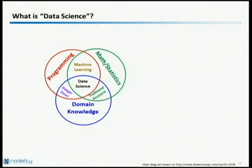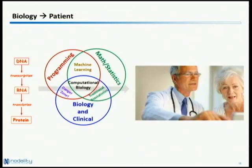I want to talk briefly about data science, because this is how we connect to the computational work. I've borrowed the idea for this Venn diagram from Drew Conway's blog, where he defined data science in a way that's very much aligned with how I think about it. It's an interdisciplinary practice whose goal is to extract insight from data and build our knowledge base. When we move into the domain of biology and clinical facts, data science essentially becomes computational biology.